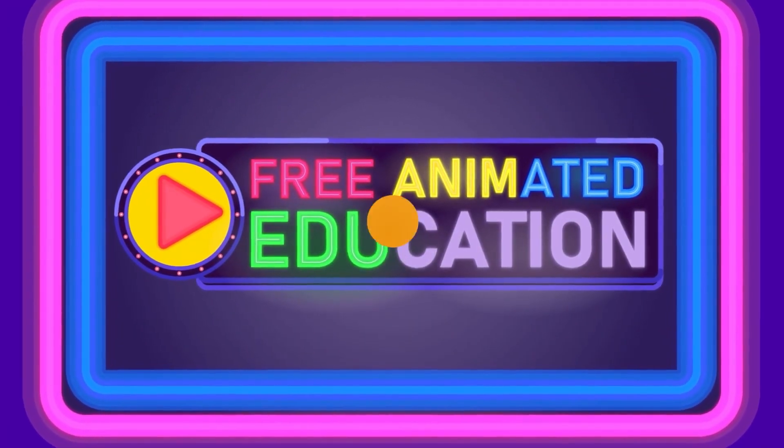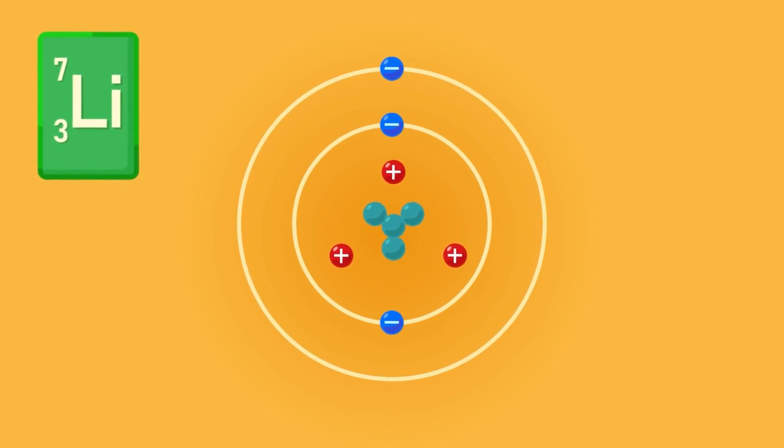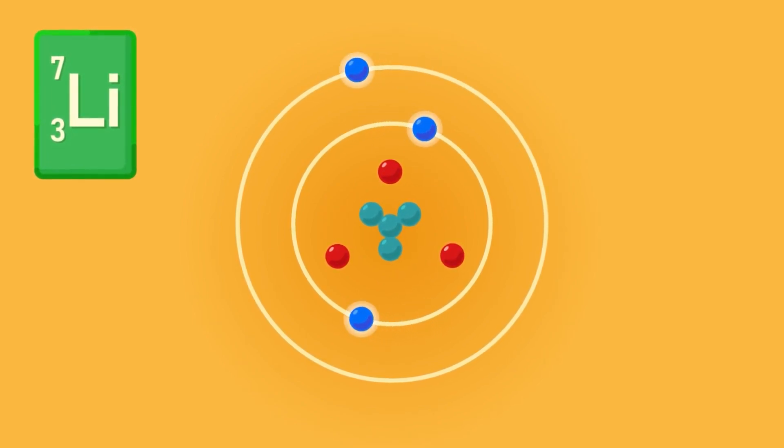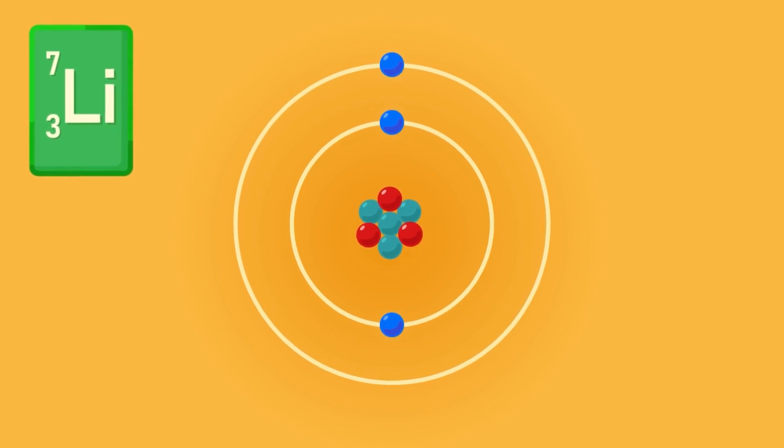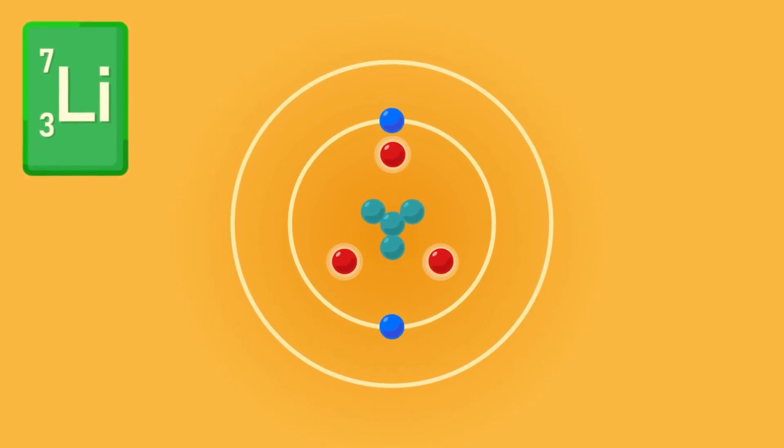What are ions? Previously we learned that atoms have equal numbers of protons and electrons which make them electronically neutral. Now an atom becomes an ion when it loses or gains electrons. In an ion, the number of protons and electrons are different.